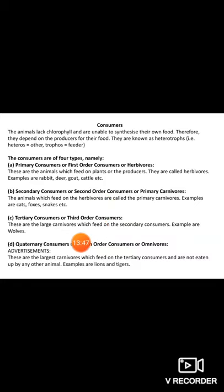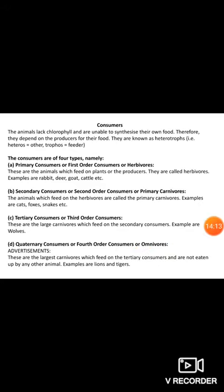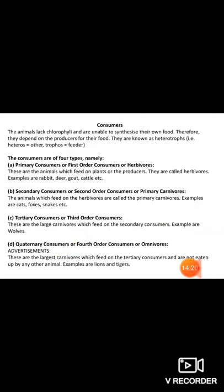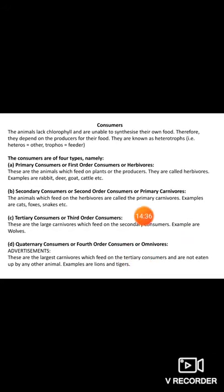Quaternary consumers, or fourth-order consumers, are also called omnivores. These are the largest carnivores which feed on the tertiary consumers and are not eaten by any other animal — for example, lions and tigers. Human beings also come in this category because omnivores can depend on any of these food sources. We are omnivores because we can eat any of these things.